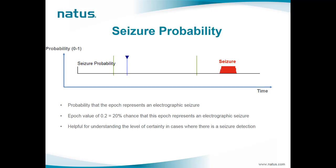The seizure probability trend provides more detail about the results of the Persyst seizure detection algorithm than the seizure detection trend. This detailed information may be relevant to users who want to see cases where there is some indication of seizure activity that does not rise to a sufficient level to be considered a seizure detection. It may also be useful for understanding the level of certainty in cases where a seizure is detected. The seizure probability trend uses a bar graph scaled so that at each one-second interval, the height of the bar represents the probability that the interval represents an electrographic seizure.